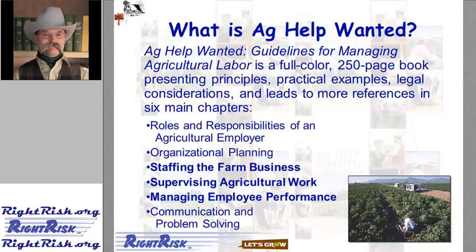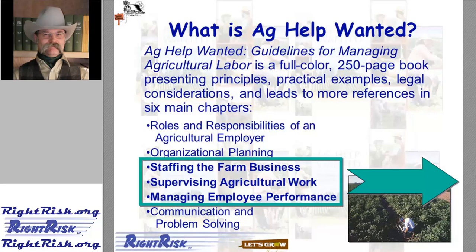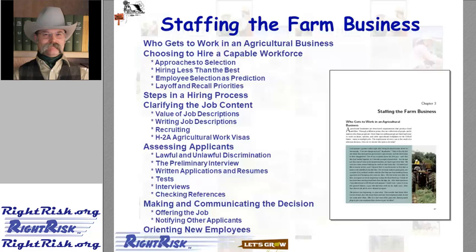So what exactly is Ag Help Wanted? It was assembled by a group of six different agricultural economists from several different western states and Canada, including myself. It's organized into six separate chapters, and I will cover the high points of only three of those chapters in this webinar. Chapter 3 is set up to cover staffing the farm business, all the way from deciding who gets to work in the agricultural business down to orienting new employees. Along the way, it discusses the ideas for hiring a capable workforce, including approaches to selection, establishing a hiring process, clarifying the job content, assessing the applicants, and communicating that decision.